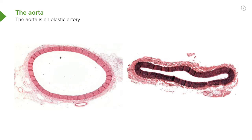The tunica media has been stained for elastic tissue. You can see that the dominant fibre in the tunica media of the aorta is elastic tissue. It has a very, very important function.